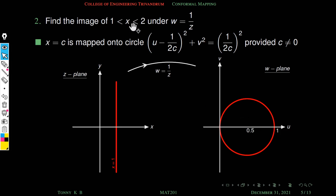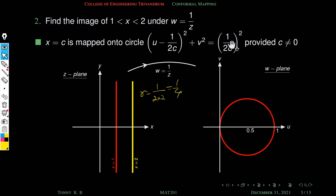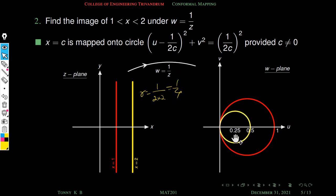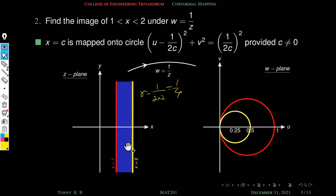For x = 2 (c = 2): radius = 1/(2·2) = 1/4 = 0.25, center at (0.25, 0), passing through (0.5, 0). So we have two circles. The region between the two straight lines maps to the region between these two circles in the w-plane.